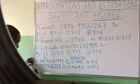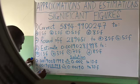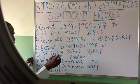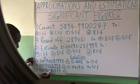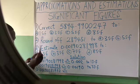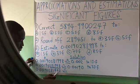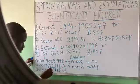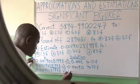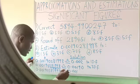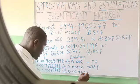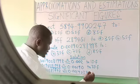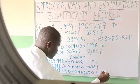Now to 7 significant figures. Rewrite: 0.001902819998, with the sign of approximation. Count from 1: one, two, three, four, five, six, seven. We stop at the first 9 after 281. The next number, 9, is up to 5 — call it 1. Add it to 9: it becomes 10. Write 0, carry 1. Add it to 1: it becomes 2. So instead of writing 1 and 9, I write 2 and 0. Answer: 0.0019028 to 7 significant figures.